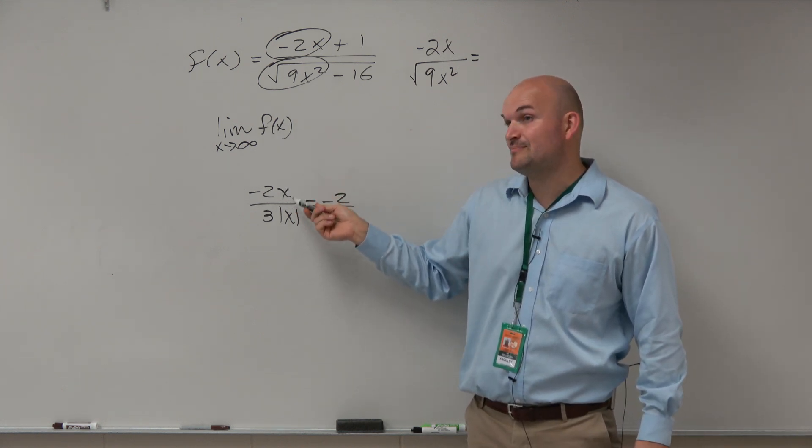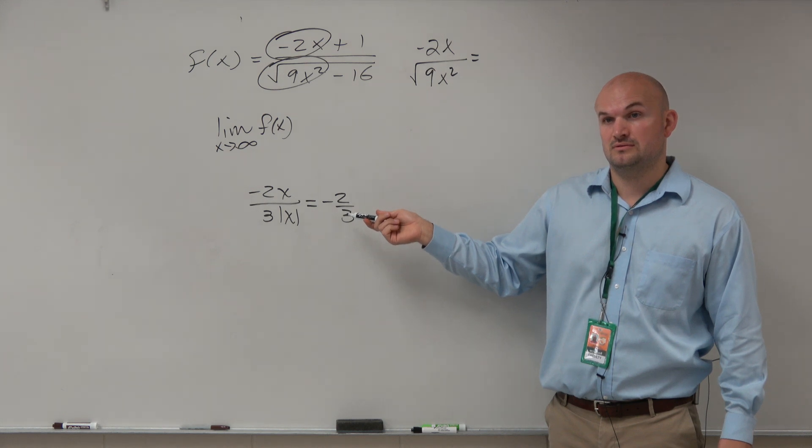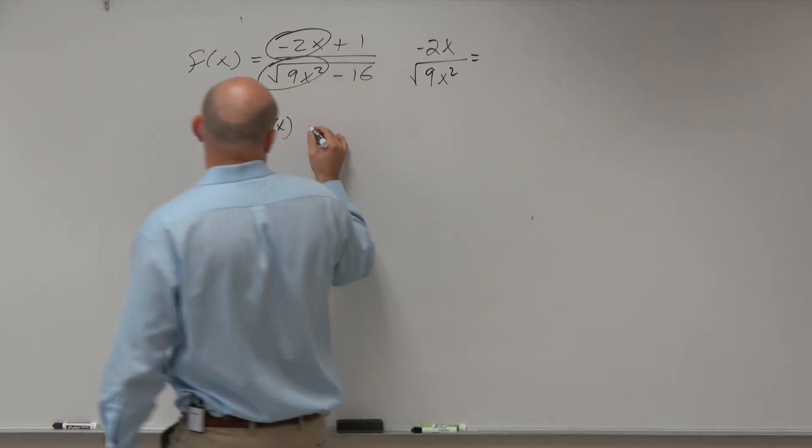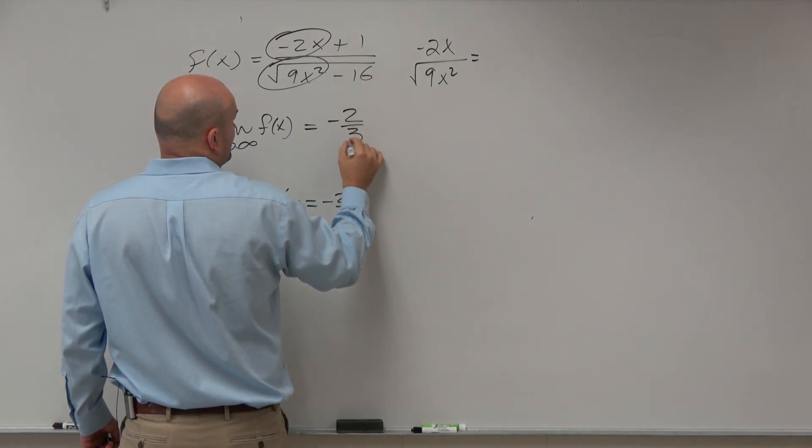As we're going to positive and positive values, this is going to approach negative 2 thirds. So the limit as x approaches infinity is just going to be negative 2 thirds.